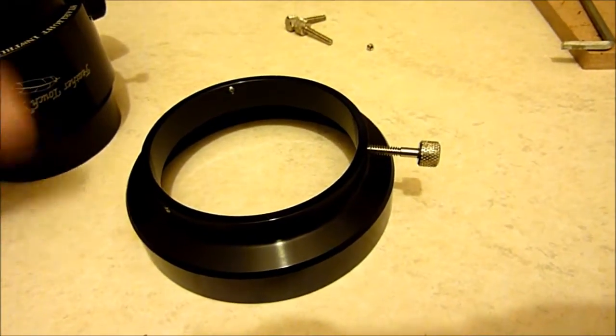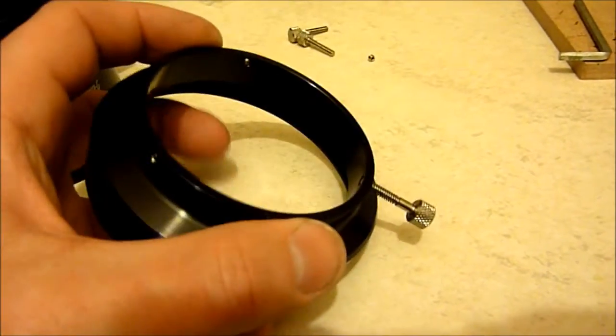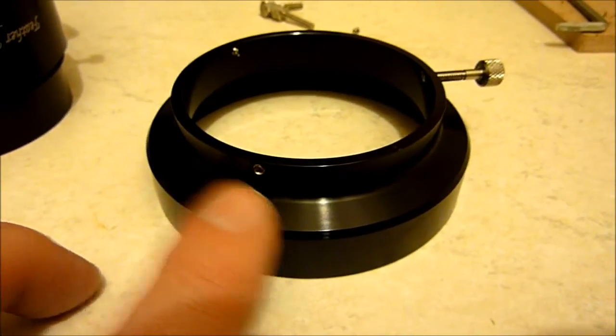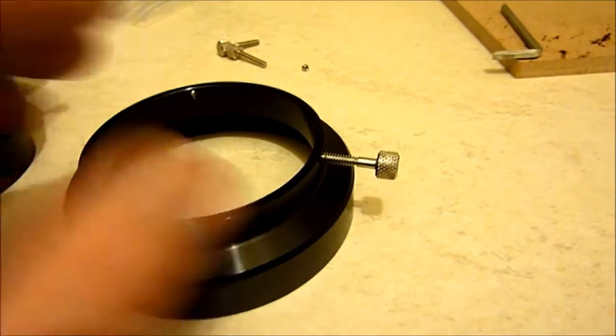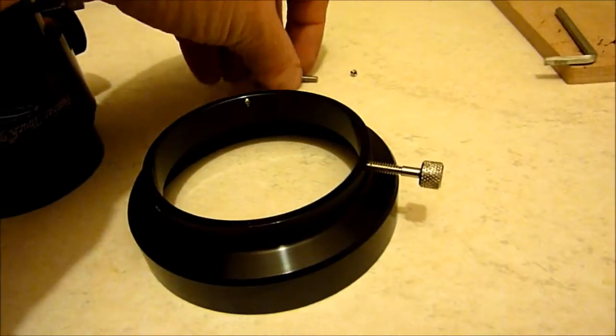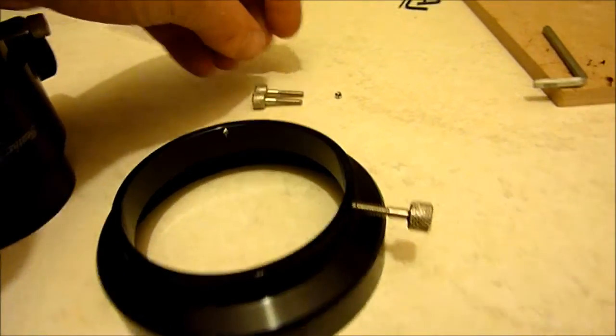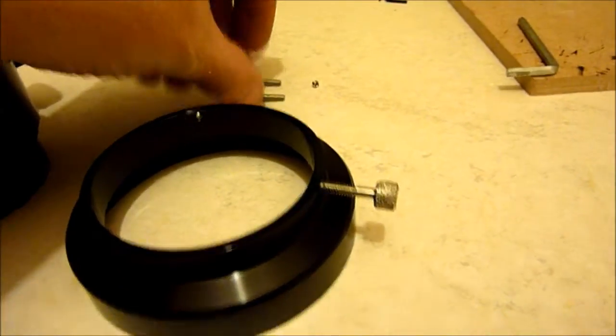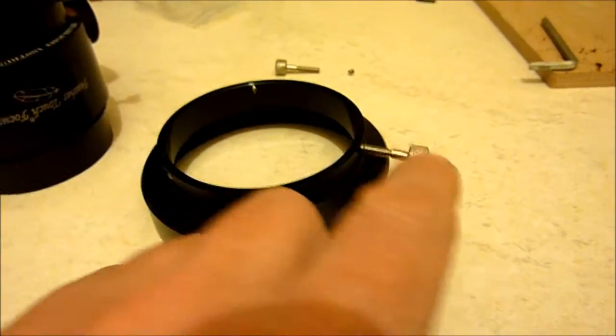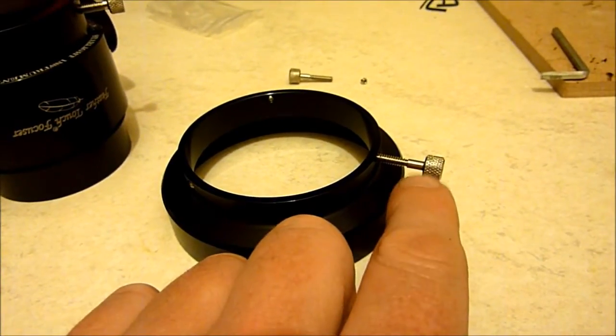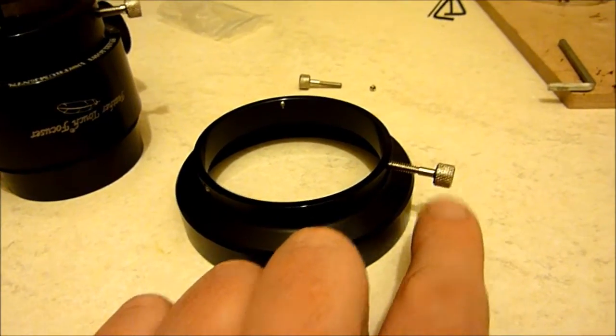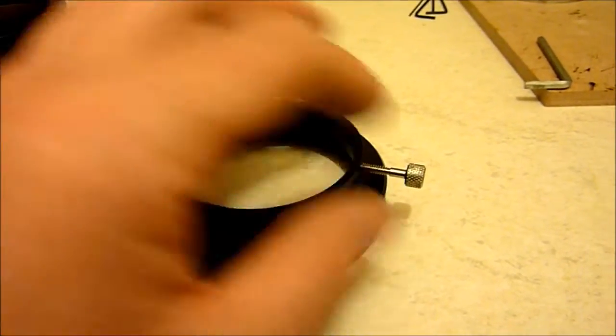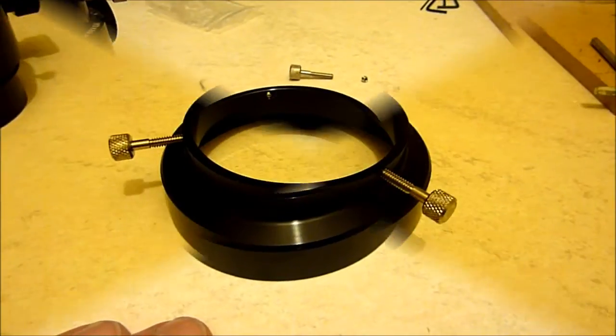When it came initially, it just has three built-in grub screws that you can use to tighten it onto the Feather Touch focuser, but mine came with three thumb screws as well. The first thing I'm going to do is take the grub screws out and replace them with the thumb screws. Quite useful if you want to rotate the focuser on the back and then just tighten up the three thumb screws at the end.